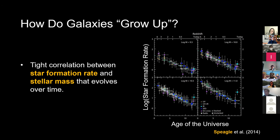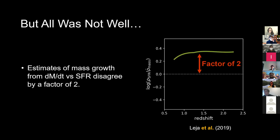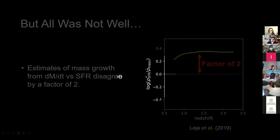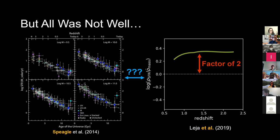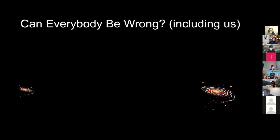However, a simple check reveals a problem: measuring star formation rate directly and computing an empirical derivative of mass — just taking the difference in mass between two times — disagrees by a factor of two. Both estimates were derived from the same data. So despite great observational consistency, the picture is physically inconsistent. The answer turns out to be rooted in data science and statistics: could everybody be wrong, and why? The spoiler is yes.